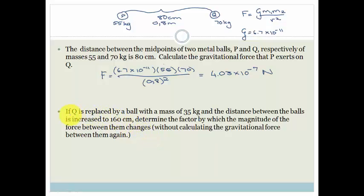Now, it says, if Q is replaced by a ball with a mass of 35 kg, so we're changing this mass to 35 kg. So, what are we doing? We're halving the mass. And the distance between the two balls increased to 160 cm. So, instead of 80 cm, we've now got 160 cm, which is 1.6 m. And it says, determine the factor by which the magnitude of the force between them changes. And they say, without calculating the gravitational force between them.